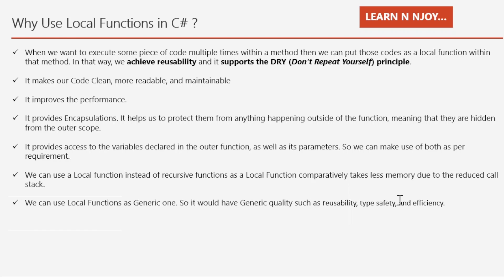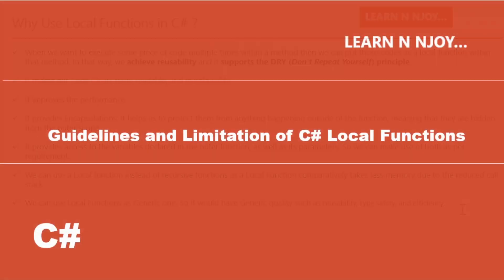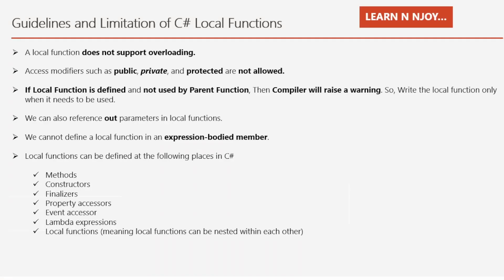Guidelines and limitations of C# local functions. A local function does not support overloading. Access modifiers such as public, private, and protected are not allowed. If a local function is defined and not used by the parent function, then the compiler will raise a warning, so write the local function only when it needs to be used. We can also reference out parameters in local functions. We cannot define a local function in an expression-bodied member.